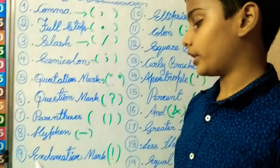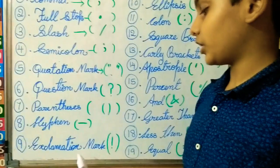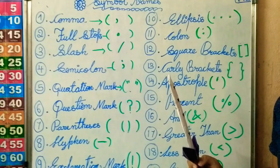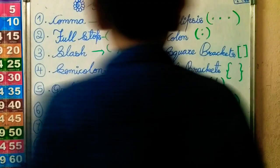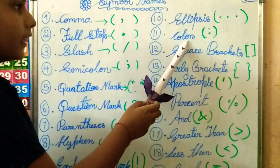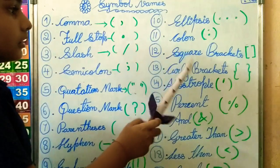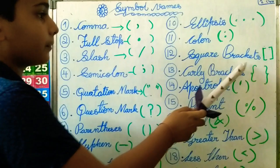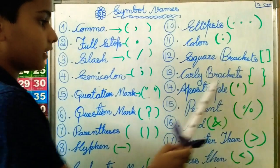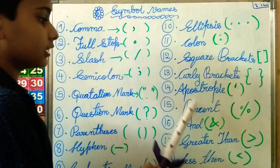Ninth one: exclamation mark. Next: ellipsis. Colon. Square brackets. Curly brackets.